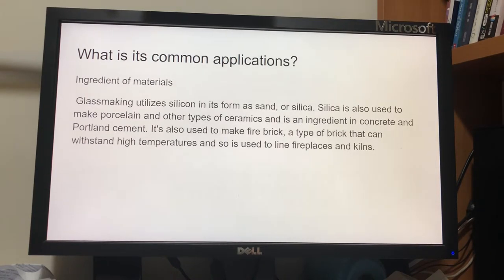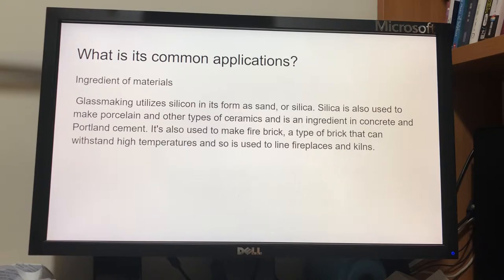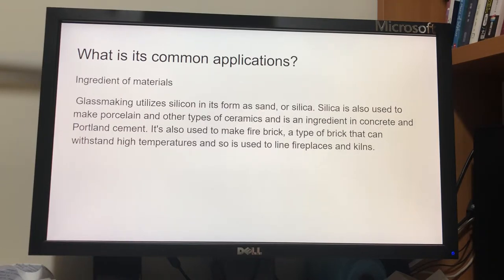What is its common application? It is used as an ingredient in materials. Glassmaking utilizes silicon in its form as sand or silica. Silica is also used to make porcelain and other types of ceramics, and is an ingredient in concrete and Portland cement. It is also used to make fire brick, a type of brick that can withstand high temperatures and so is used to line fireplaces or kilns.